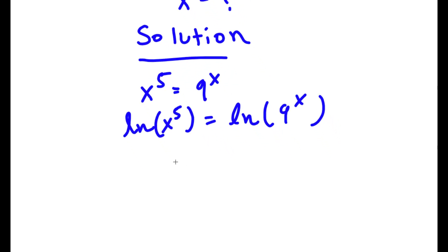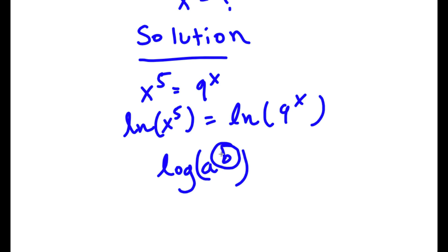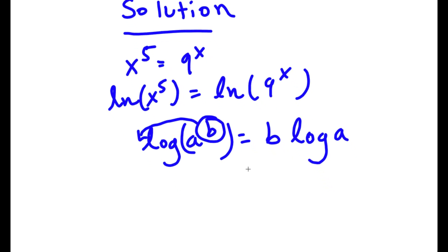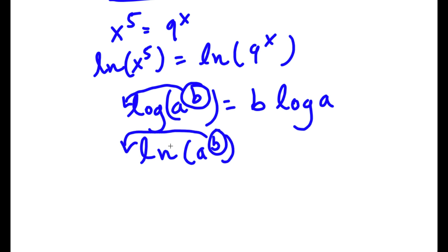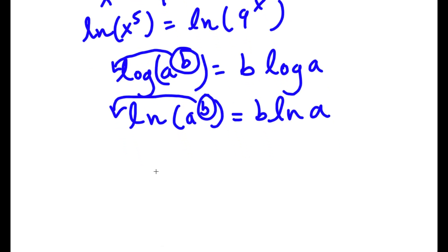Now, an important property of logarithms is that if I have log a to the power of b, I can actually move this exponent b to the front of the logarithm, so this would equal b times log a. This can also be used for natural logarithms — if I have ln of a to the power of b, I can move the exponent to the front, so this equals b times ln a.